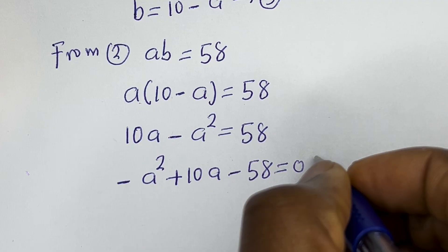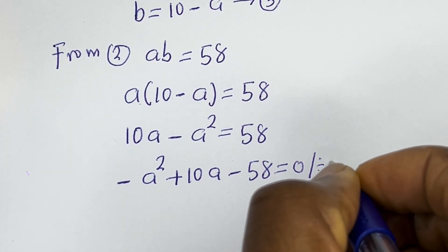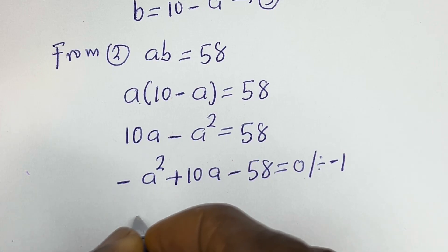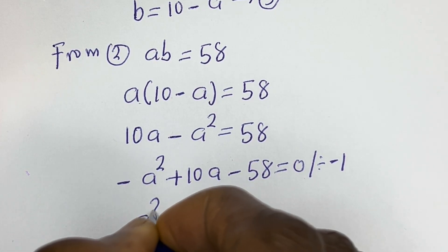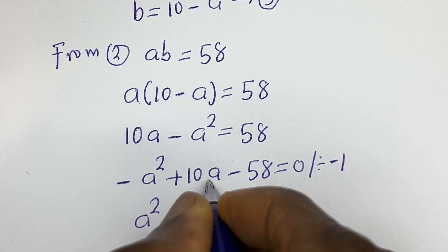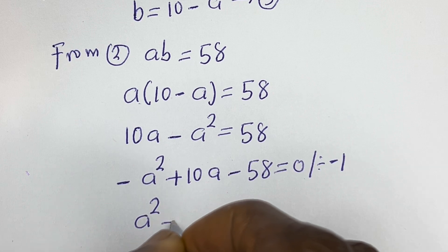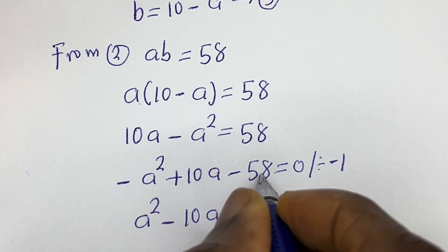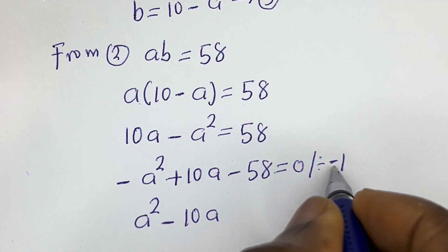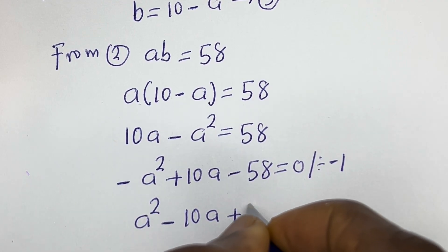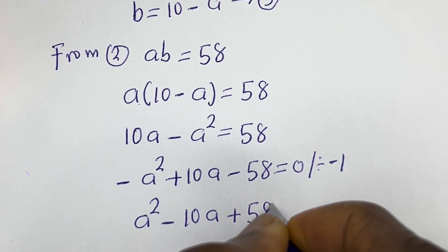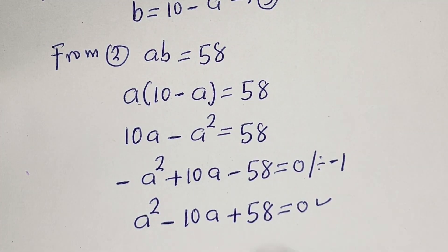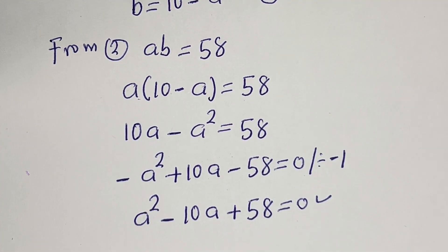Now let's divide everything by minus 1. Minus a squared divided by minus 1 gives a squared; 10a divided by minus 1 gives minus 10a; and minus 58 divided by minus 1 gives plus 58, equal to 0. So this is a quadratic equation.